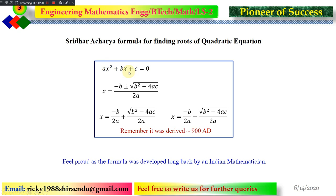This is a quadratic equation, so it has two roots: x = -b/2a + √(b² - 4ac)/2a and x = -b/2a - √(b² - 4ac)/2a. It should be remembered that this formula was derived long back by an Indian mathematician, and that is why we should feel proud of this equation.